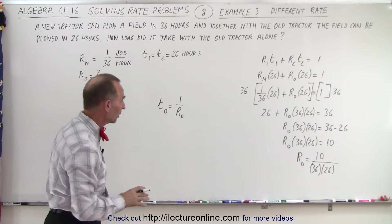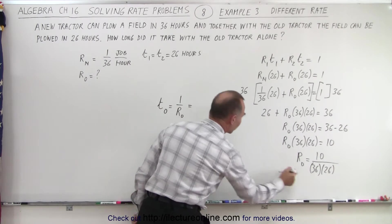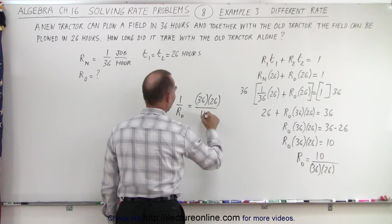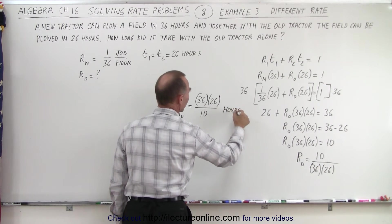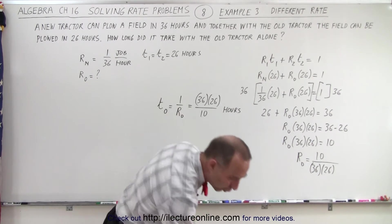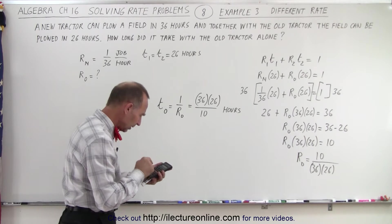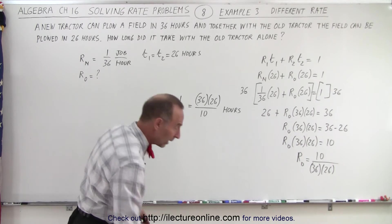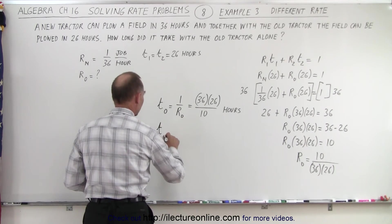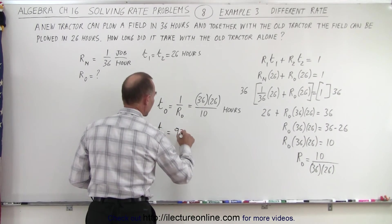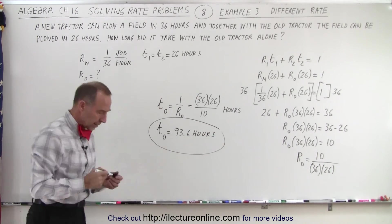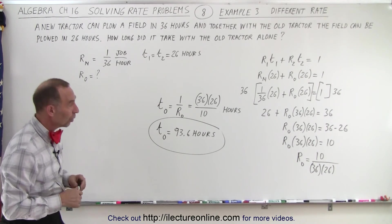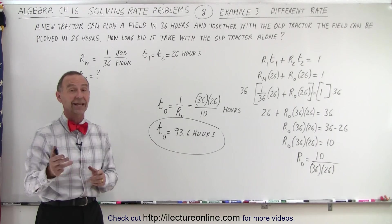The time of the old tractor equals the inverse of that rate, which is 36 times 26 divided by 10, and of course that's in hours. That's how long it would take for the old tractor to do the whole job by itself. Let's calculate: 36 times 26 divided by 10 gives us 93.6 hours. So the old tractor took 93.6 hours — no wonder they bought a new one, since the new one is a whole lot faster. And that is how it's done.